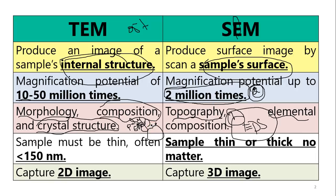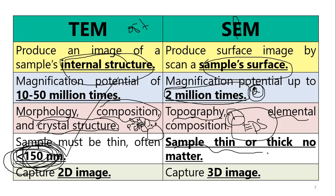For TEM analysis, the sample must be very, very thin because we want electrons to pass through — the sample should be below 150 nanometers. For SEM, the sample may be thin or thick; we do not have any problem as long as the sample fits within the sample holder.